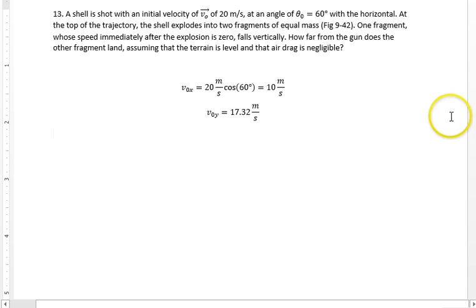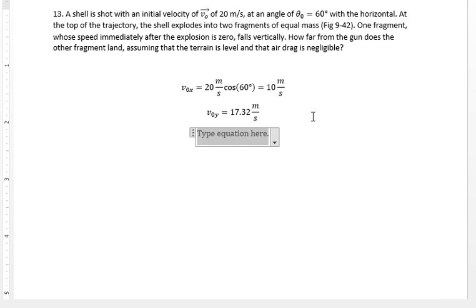Okay, one fragment, immediately after the explosion, zero, falls vertically. How far does the gun fragment land? Assuming the terrain is level and air drag is negligible. How far away does it land? All right, so, how high does it go? The quick and dirty way to get to how high it goes is that one-half m v_0y squared equals mgh. All the kinetic energy for the y velocity converts into height. I don't care how high it goes. I'm sorry. So, I want to know how long it takes.